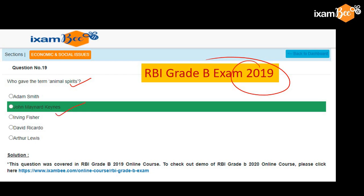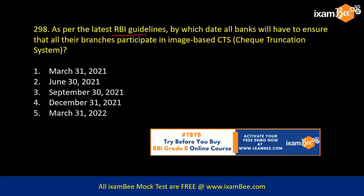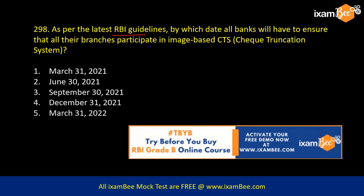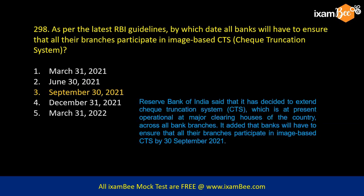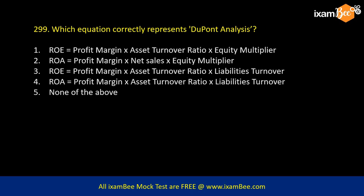As per RBI guidelines, by which date must all banks ensure that their branches participate in image-based CTS — Check Truncation System? The date is 30th September 2021. CTS is already present in most clearing houses in the country, and RBI has now given a deadline that by 30th September all branches have to participate in this system.